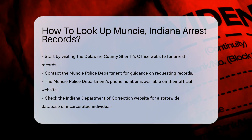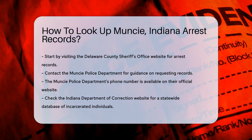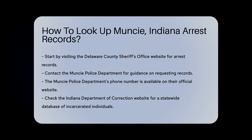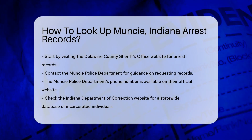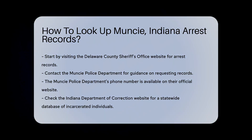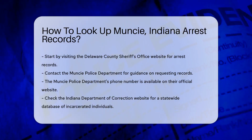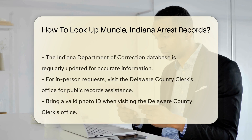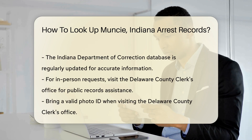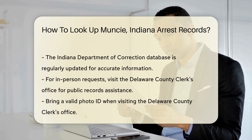Next, you may want to contact the Muncie Police Department directly. They can guide you on how to request records. Their phone number is available on their official website, and they are usually responsive.